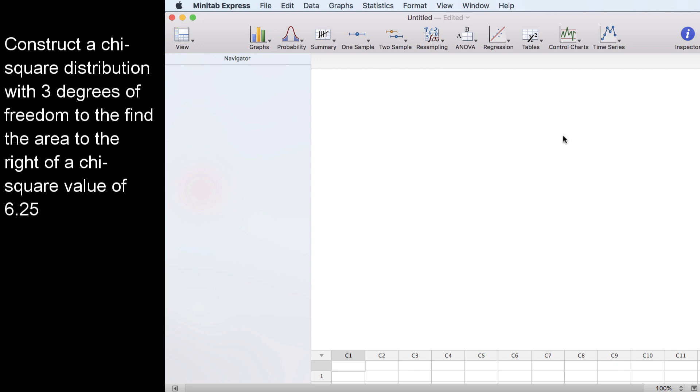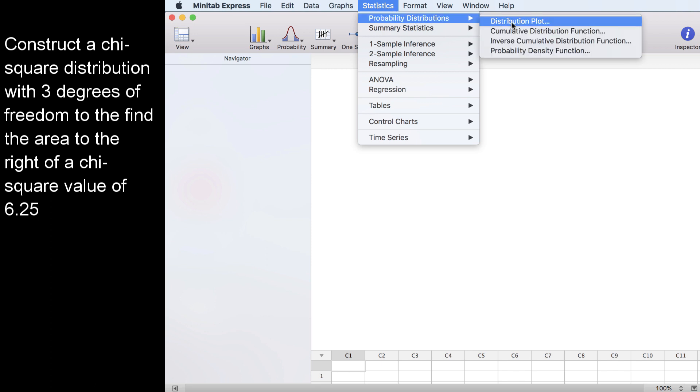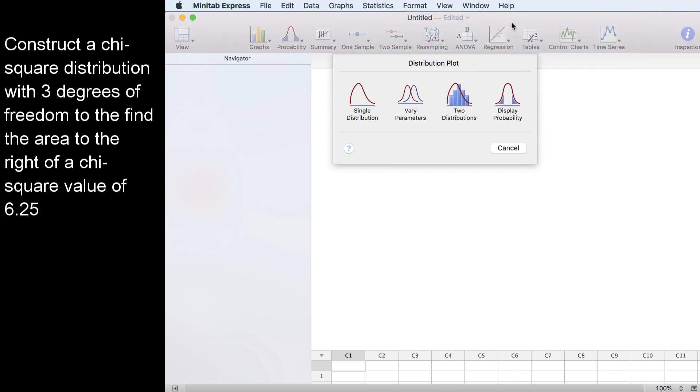I'm on a Mac, so I'll go to Statistics, Probability Distributions, Distribution Plot. If you're using a PC, you'll just go to Statistics, Distribution Plot.